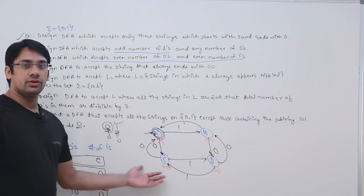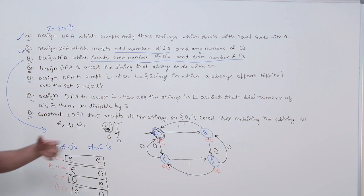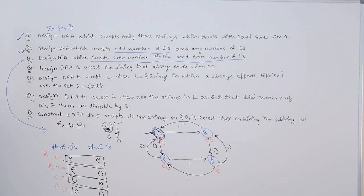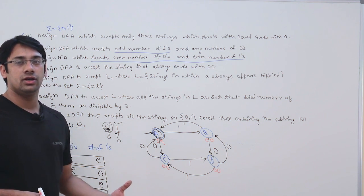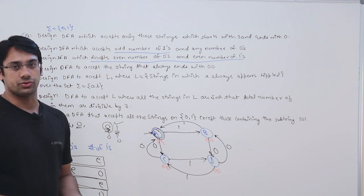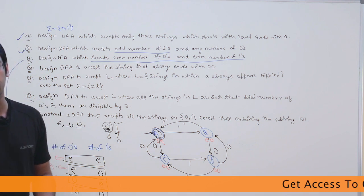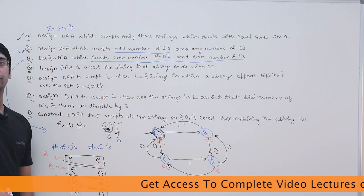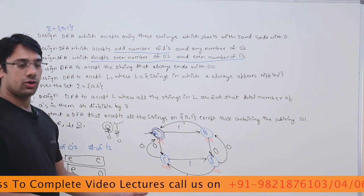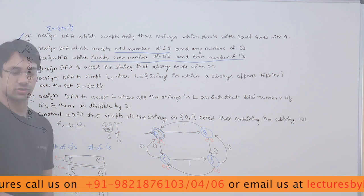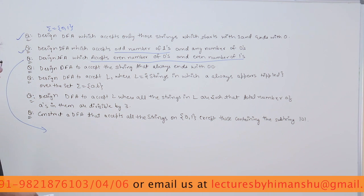We need to accept even number of zeros and even number of ones, and only state A represents even-even. Therefore state A will become a final state. This DFA represents the language where number of zeros and number of ones are both even. The diagram is very easy to draw. There are different methods to do the same question — let me clear this up and show you one more method.